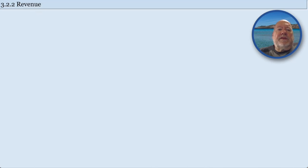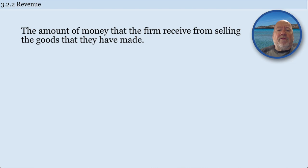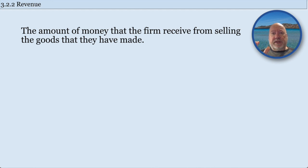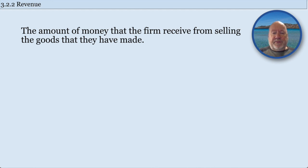We're going to start in this video by looking at revenue. The revenue that the firm receives is simply the amount of money they get by selling all the quantity they've produced and multiplying it by the price.